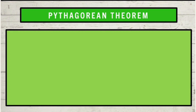This theorem is named after the Greek mathematician Pythagoras. It was proved by him and the Pythagoreans, who are the followers of Pythagoras. At the present, there are about 300 known proofs of the Pythagorean theorem, and today we will prove one.